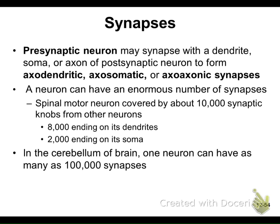Typically our artist renderings show maybe 5 to 20 dendrites, but a neuron can have up to 10,000 dendrites and thousands of synaptic knobs as well. These can be amazingly complex cells. In the cerebellum, which handles motor coordination and balance, some neurons have as many as 100,000 synapses — one neuron communicating with 100,000 other cells.